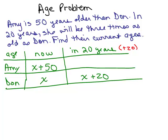Same thing for Amy. If she is X plus 50 right now, how old will she be in 20 years? We're going to add 20. So you could say X plus 50 plus 20, but if we simplify it, that's just X plus 70. I'm sure most of you could do that in your head and just write X plus 70.